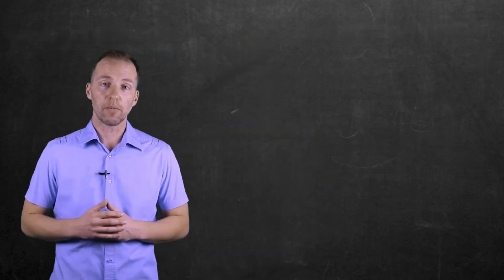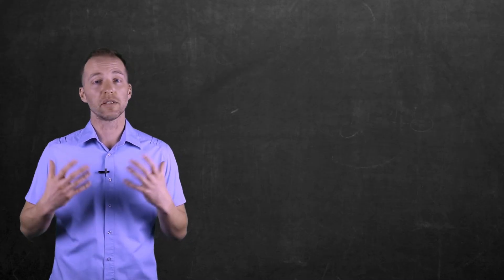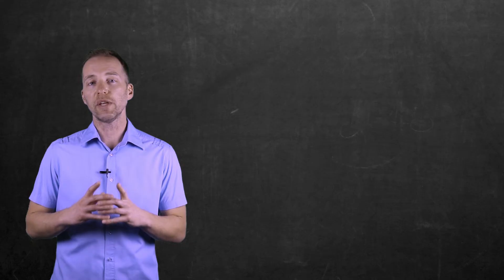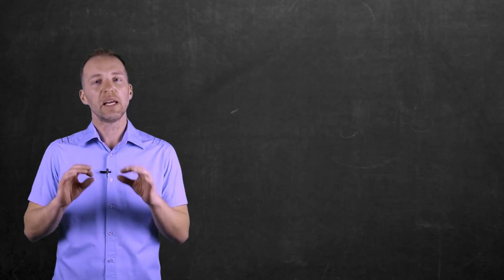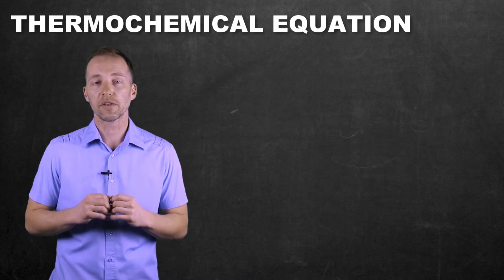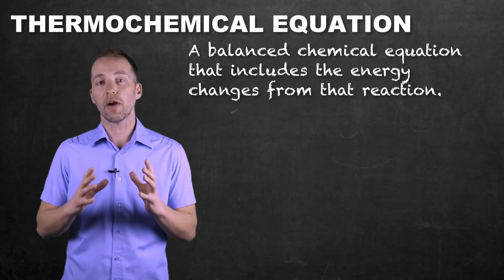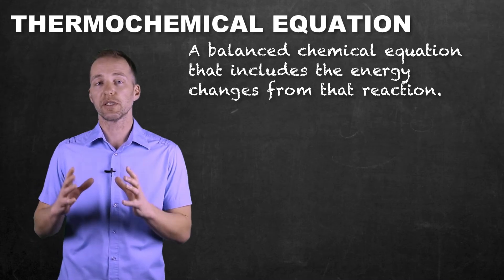So just as we use balanced chemical equations to represent how and what reactants form what products and in what ratios, we're now going to include energy or heat into these balanced chemical equations as something called thermochemical equations. And there's a few ways that we can represent this. The first is to include our energy within the chemical equation itself.